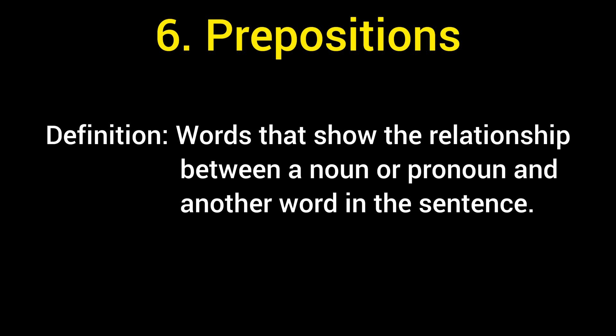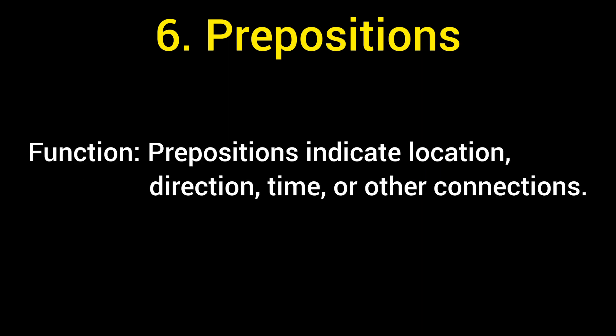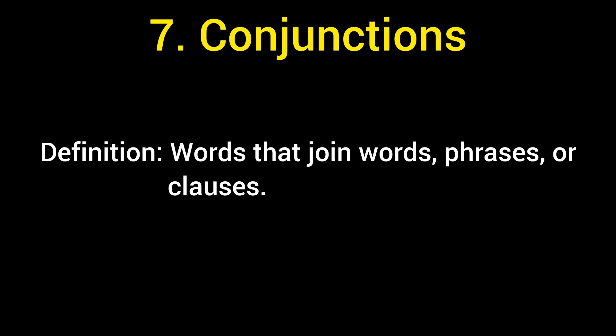6. Prepositions. Definition: Words that show the relationship between a noun or a pronoun and another word in the sentence. Examples: in, on, to, by, for, of, with. Function: Prepositions indicate location, direction, time, or other connections.